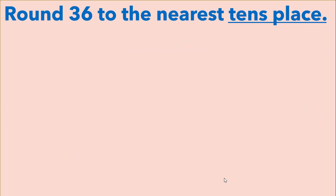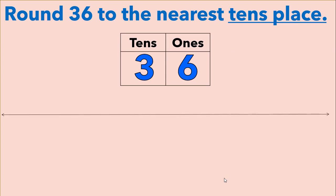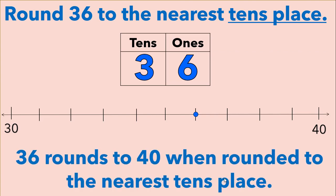Now let's round thirty-six to the nearest tens place. We're going to start with our place value chart and put our digits into it. We can see that we have three tens in the number thirty-six. So when we create our number line, we're going to start with three tens or thirty. One more ten than three tens is four tens or forty. We break our number line up into ten equal parts. Since there are ten parts in between thirty and forty, each part represents one whole, so we can plot thirty-six on the sixth line after thirty. We can see thirty-six is closer to forty, so thirty-six rounds to forty when rounded to the nearest tens place.